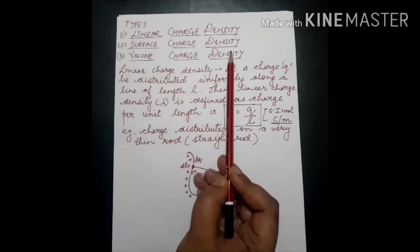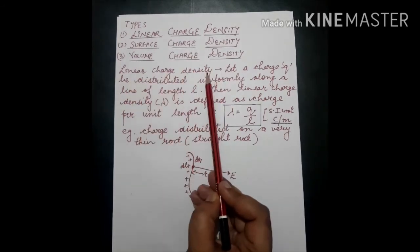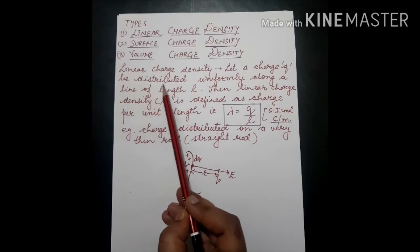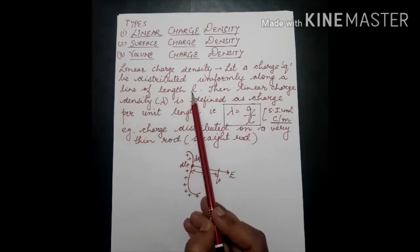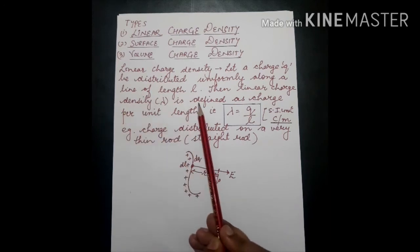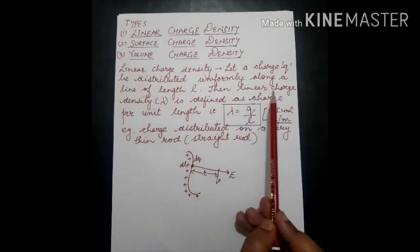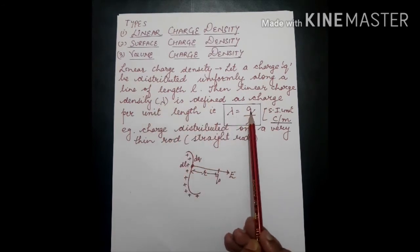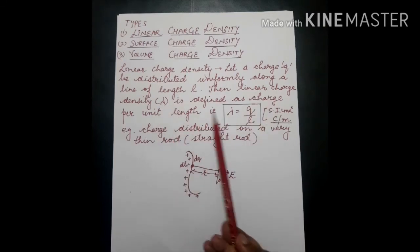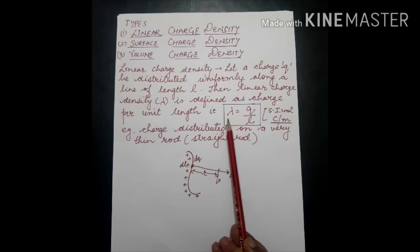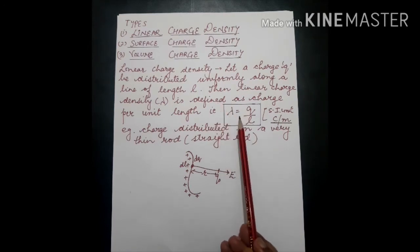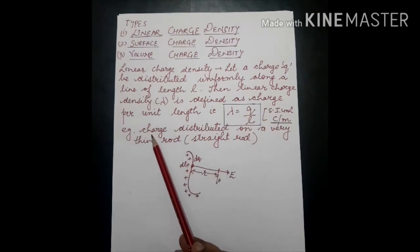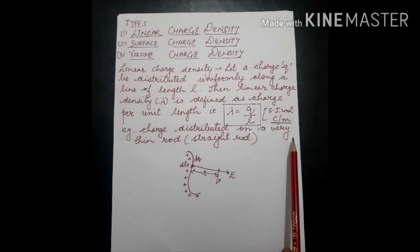The first type is linear charge density. Suppose there are a number of charges, and a single charge Q is distributed uniformly along a length. If we consider a length L, we use linear charge density. Linear charge density, denoted by lambda (λ), is defined as λ = Q/L — that is, charge per unit length. The SI unit is coulombs per meter (C/m). An example is charge distributed on a very thin rod.